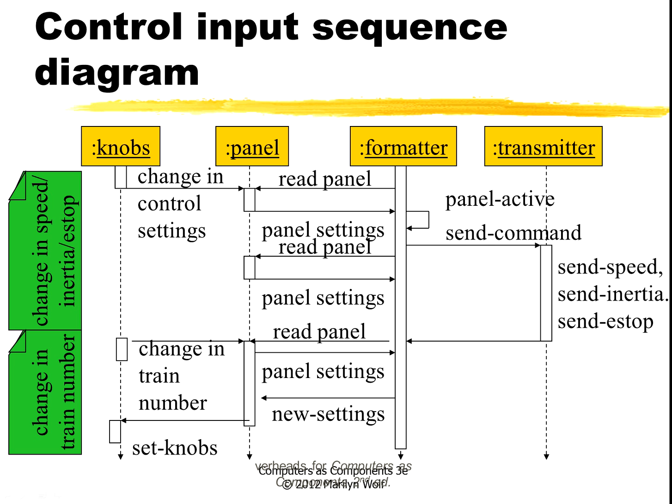Here is a sequence diagram showing the panel side operation. Here are the knobs that the user actually deals with. Here's the front panel itself, the formatter for the messages, and the transmitter that talks to the tracks. So here we have a change in the control settings, we have a function that reads the panel, does a format operation, and then sends a message over the tracks.